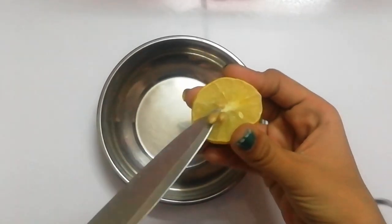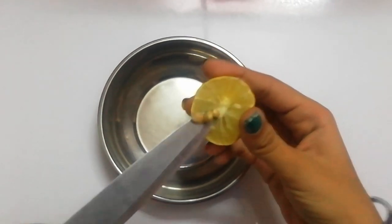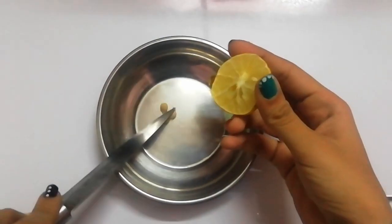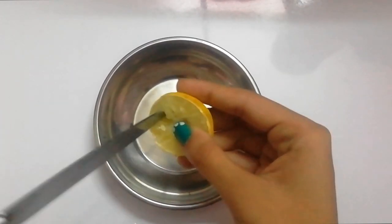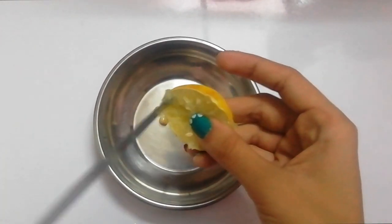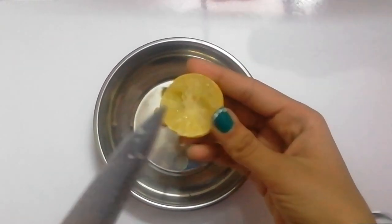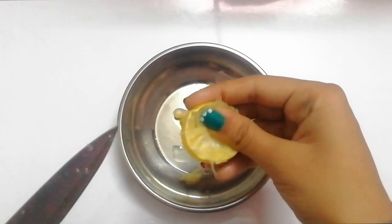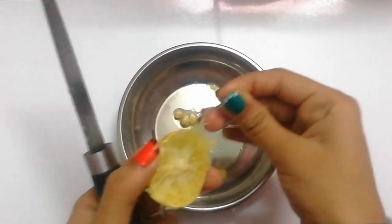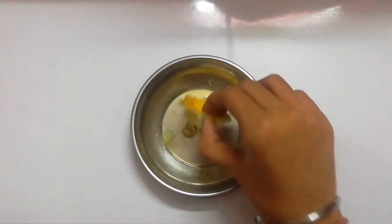We are going to make this one. You have to cut the lemon in the middle. Remove all the seeds, juice, and pulp. Squeeze the lemon and clean it completely by removing all the seeds.